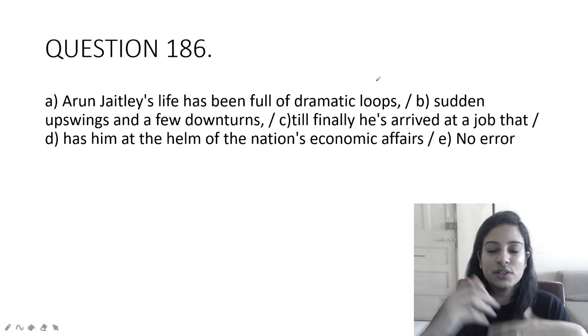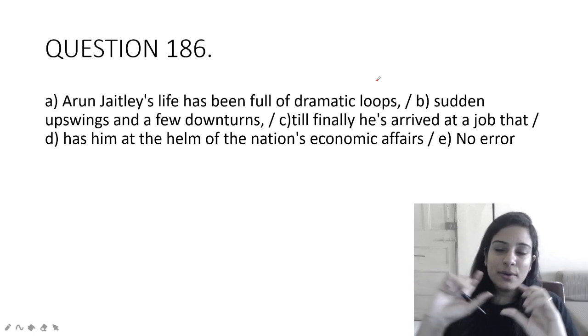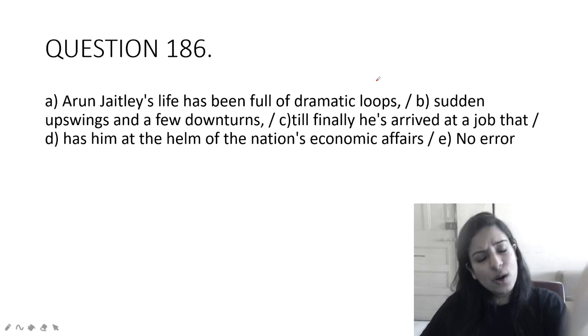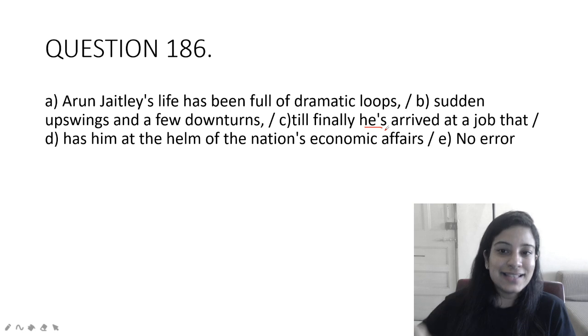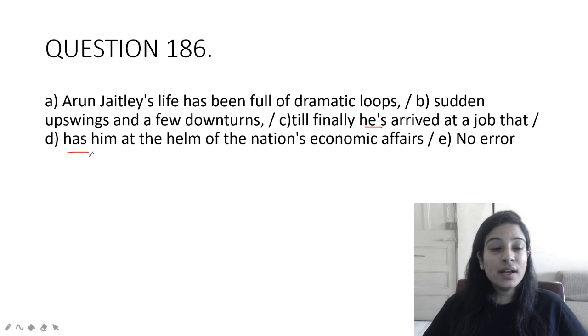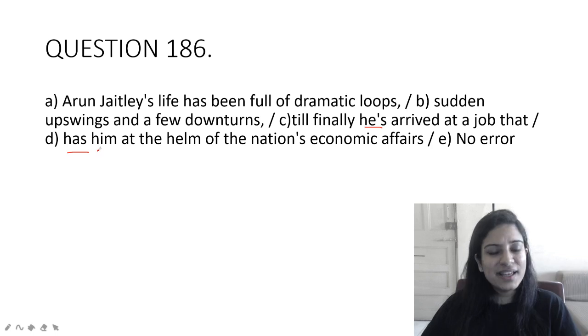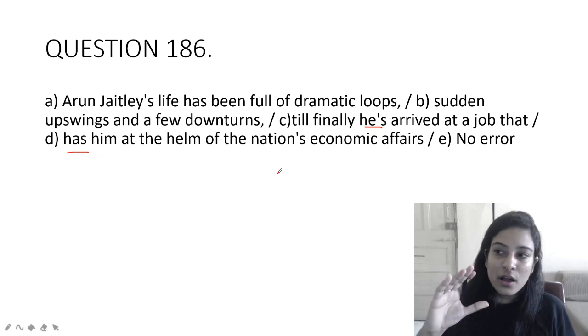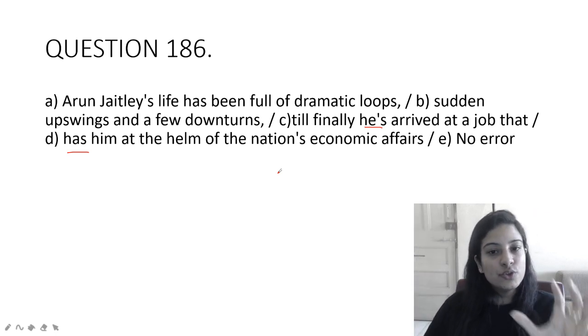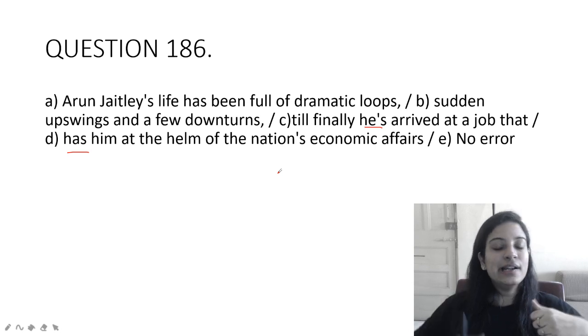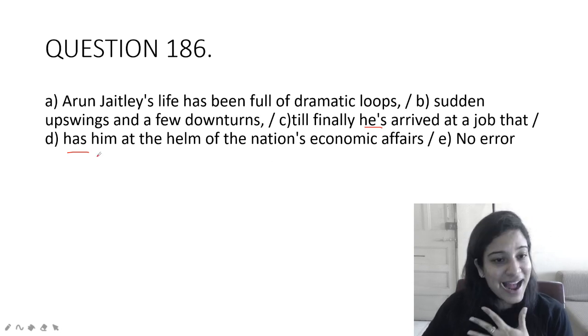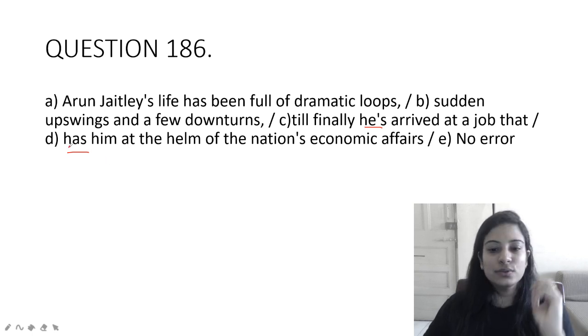Women riding pillion on two-wheelers in the capital have to compulsorily wear helmets according to the final notification issued by Delhi government. Pillion rider is the person sitting at the back on two-wheelers. Arun Jaitley's life has been full of dramatic loops, sudden upswings and a few downturns, till finally he has arrived at a job that has him at the helm of nation's economic affairs. There is no error. Dramatic loops, Arun Jaitley ji's life was filled with dramatic loops, upswings, downturns. He has, short form here, he has arrived at a job that has him. Has is used as main verb. To have someone, this means like I am glad to have you here. So we had him at the helm of nation's economic affairs. Helm means leadership role. So economic affairs single-handedly managed. So that is what has been used. It is right, no error in this sentence.